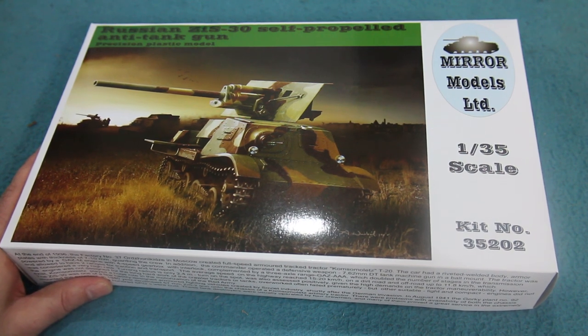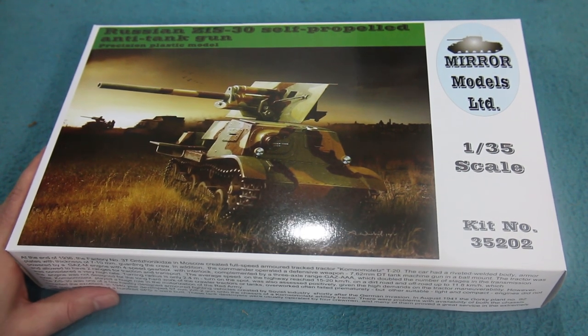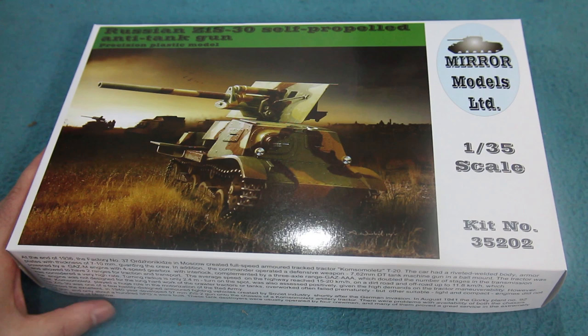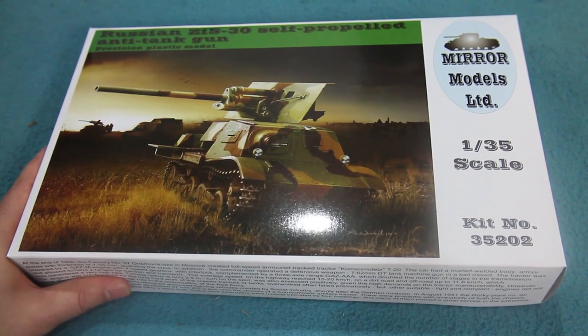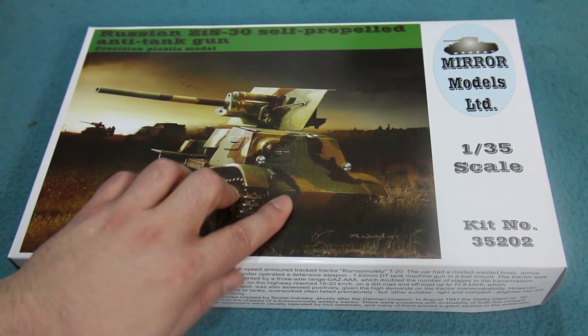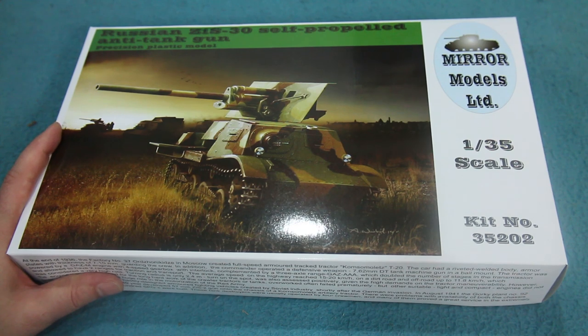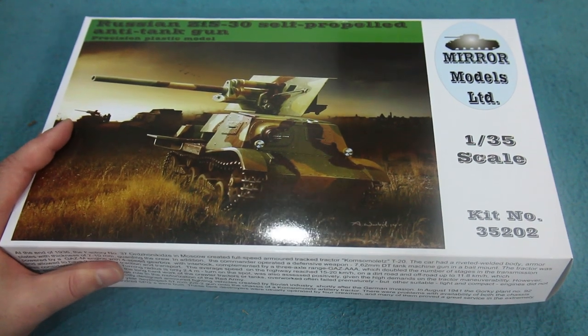It puts me in mind a little bit of the German vehicle that was based on the RSO chassis. There's an RSO/3 I think that has a lightly armored cab and a 7.5 centimeter Pak 40 based on the load bed. This is a similar kind of thing, a very basic track tractor but with a fairly potent anti-tank gun fitted onto it.